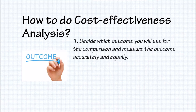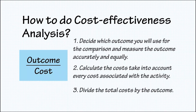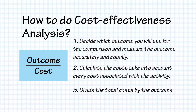For CEA, first, decide which outcome you will use for comparison and measure the outcome accurately and equally. Then, calculate the cost, taking into account every cost associated with the activity. Last, divide the cost by the outcome. Projects can be rank-ordered by CEA ratio from lowest to highest — the most cost-effective project has the lowest CEA ratio. All projects calculated as effectiveness per unit of cost should be ranked inversely.